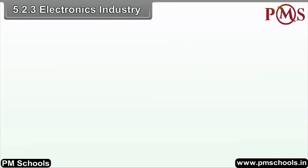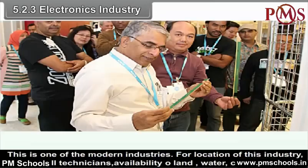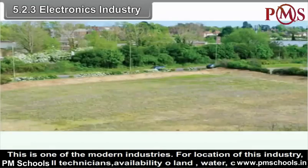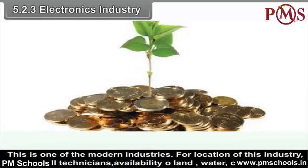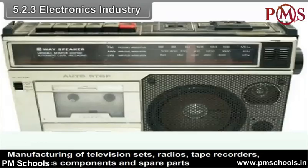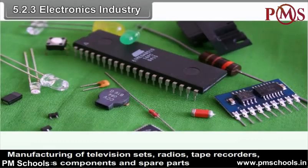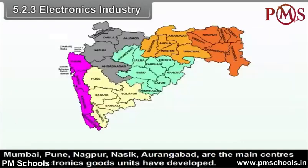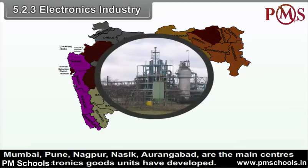The electronics industry is one of the modern industries. For location of this industry, highly skilled technicians, availability of land, water, capital, energy and latest technology are the prerequisites. Manufacturing of television sets, radios, tape recorders, electronic components and spare parts come under electronic industry. Mumbai, Pune-Chinchwad, Nagpur, Nasik and Aurangabad are the main centres where electronics goods units have developed.